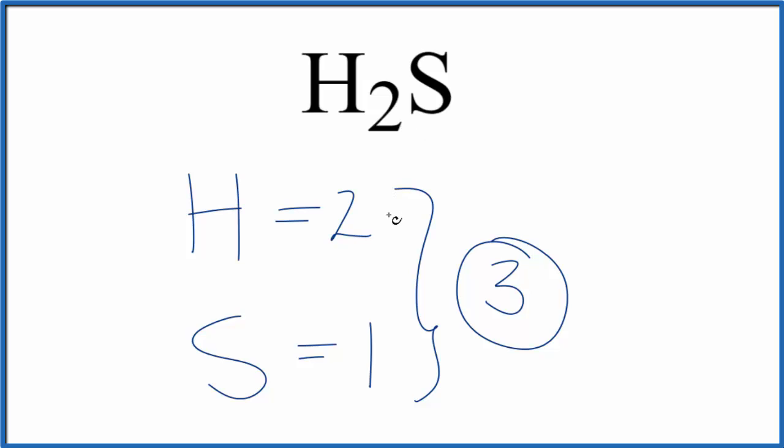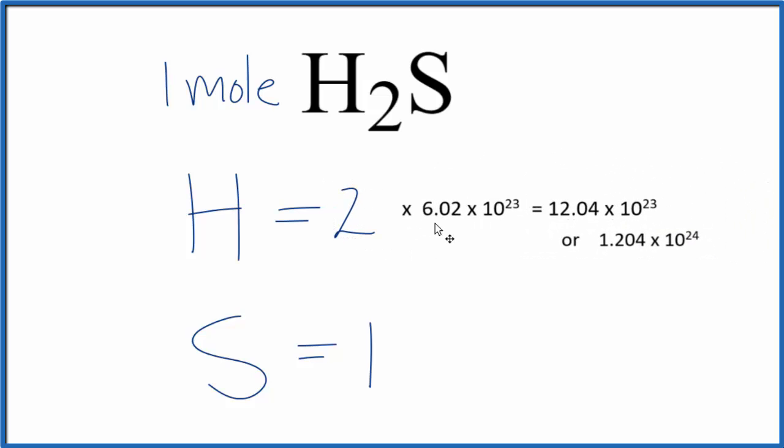Sometimes you're asked, how many atoms do you have in one mole of H2S? If you wanted to know the number of hydrogen atoms here in H2S, you just multiply two by Avogadro's number, and that would give you 12.04 times 10 to the 23rd atoms of hydrogen in one mole of H2S.